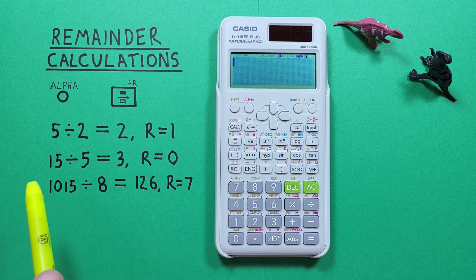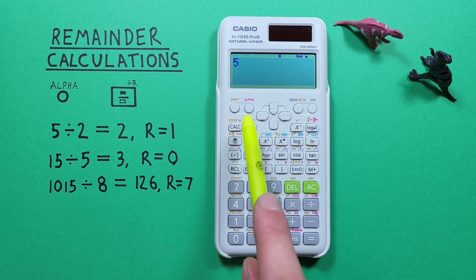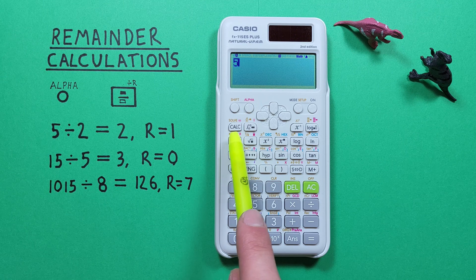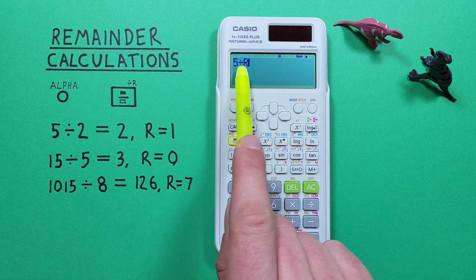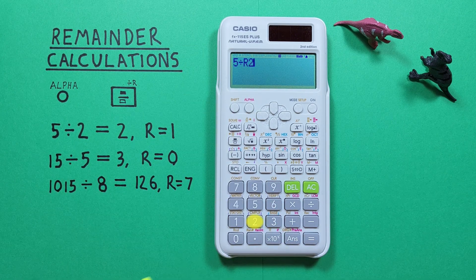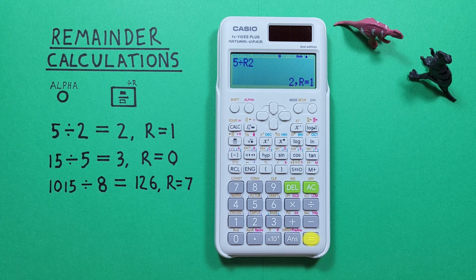First we place 5 on our screen and then press the alpha key and then the fraction key with the alpha of divided by R or remainder. There we go, we see the remainder symbol on our screen and then we enter 2 and press equals.